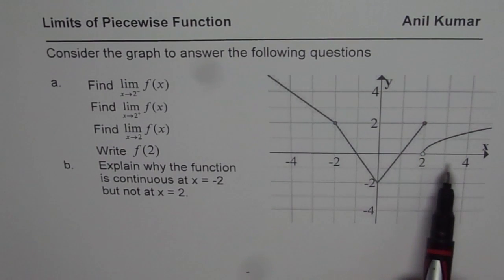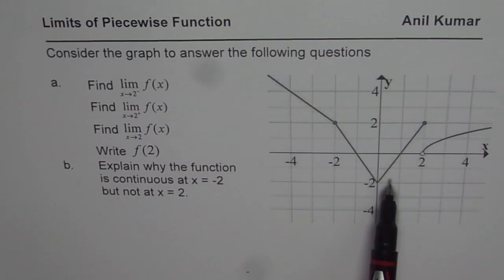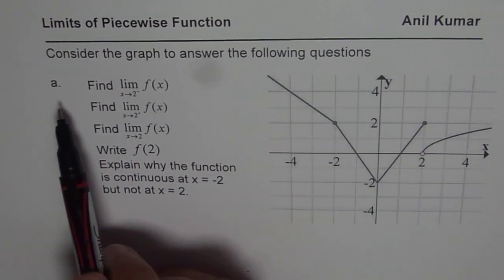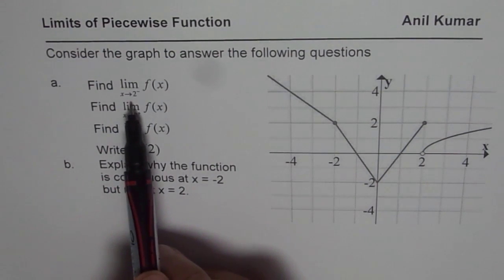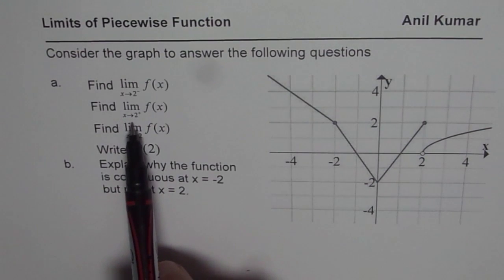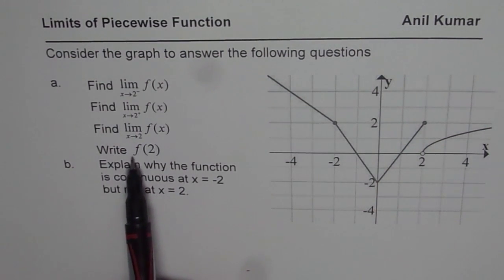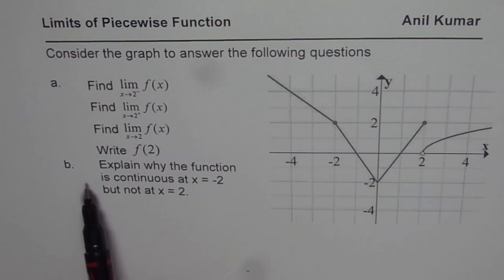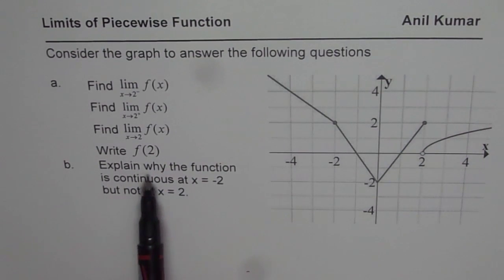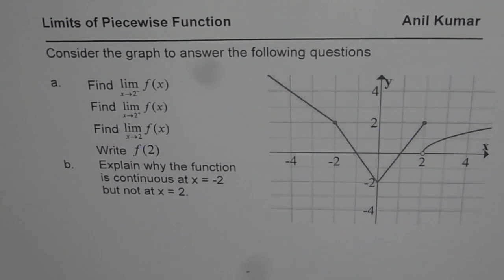We are given a piecewise function here. You need to pause the video and answer these questions with reference to the given graph. The first question is: find the limit of the function as x approaches 2 from the left side; as x approaches 2 from the right side; as x approaches 2; and write the value of the function at 2. The second part asks you to explain why the function is continuous at x equals negative 2 but not at x equals 2. Pause the video, write down your answers, and then look into my suggestions.